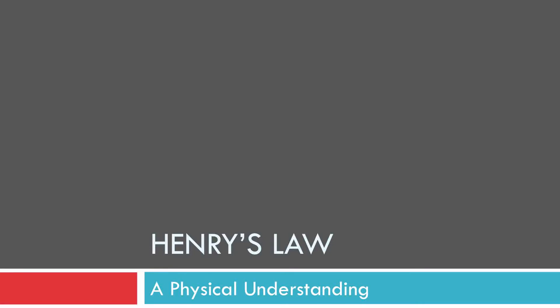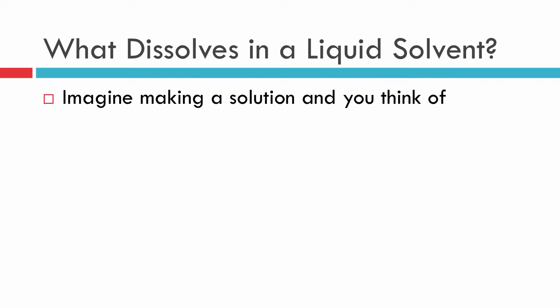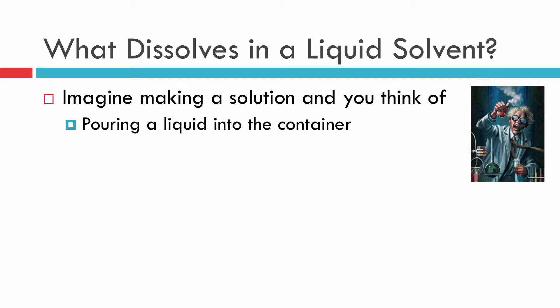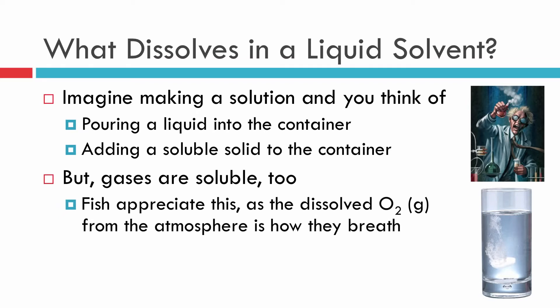Hi chemistry students, let's talk about Henry's Law, which shows how gases and liquid solvents interact and make mixtures. We're going to build this by creating a physical understanding which will lead to a mathematical relationship. When we say something dissolves in a liquid solvent, most people think about mixing two liquids together, or adding a soluble solid to a container. We've put solubility rules to memory to predict what happens in water — but gases are soluble too.